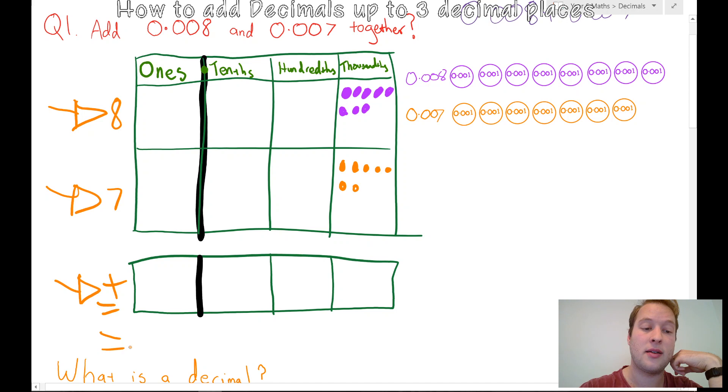If I want to write the answer, I could say I've got 0 ones and my decimal point. I've got no tenths and no hundredths. If I said I've got 15 thousandths, you actually can't say I have 15 thousandths, because in place value, each place value, each line, you can only have one digit, which means the maximum number you can have is 9. Once it gets to 10, you have to regroup.